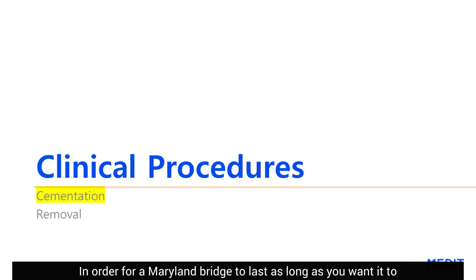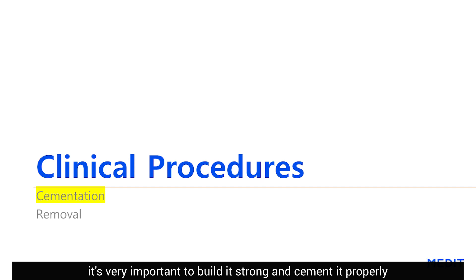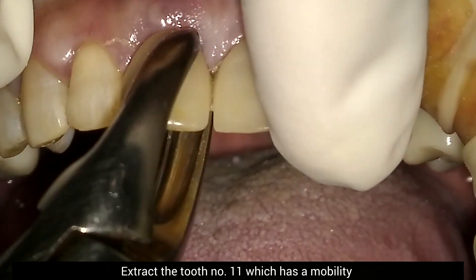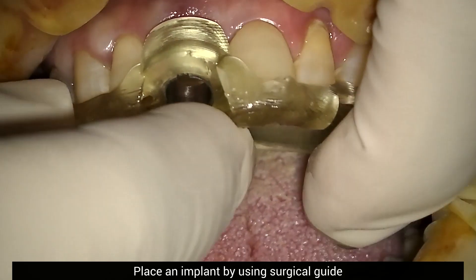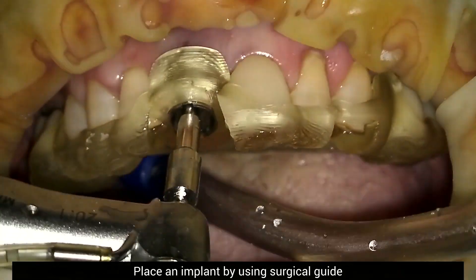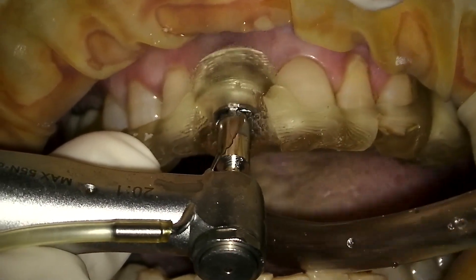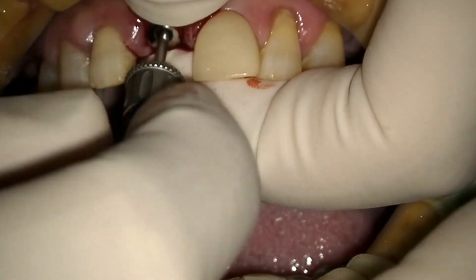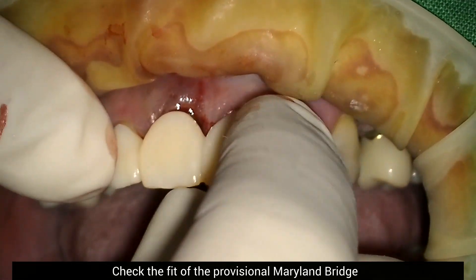In order for a Maryland bridge to last as long as you want it to, it's very important to build it strong and cement it properly. Extract tooth number 11 which has some mobility, place an implant using a surgical guide, and connect the healing abutment. Check the fit of the Maryland bridge.